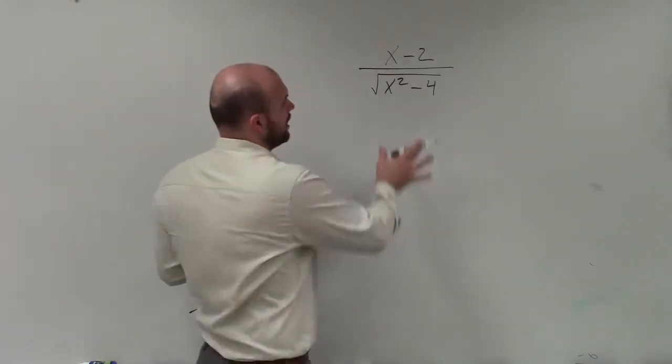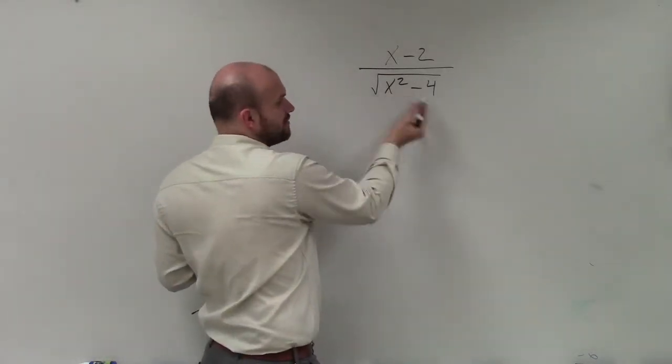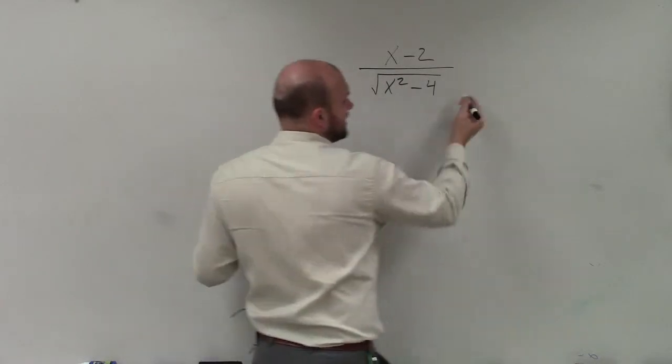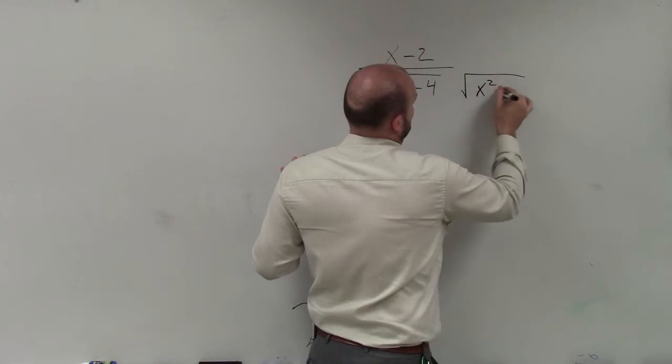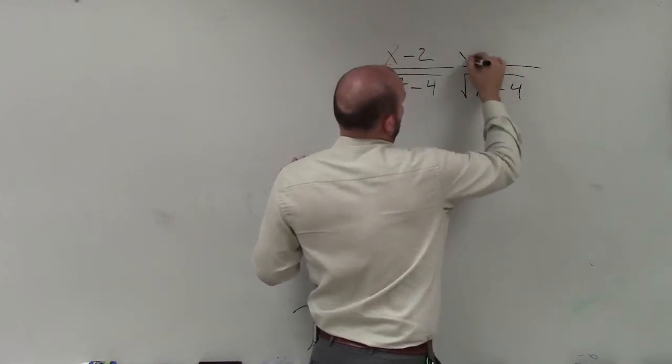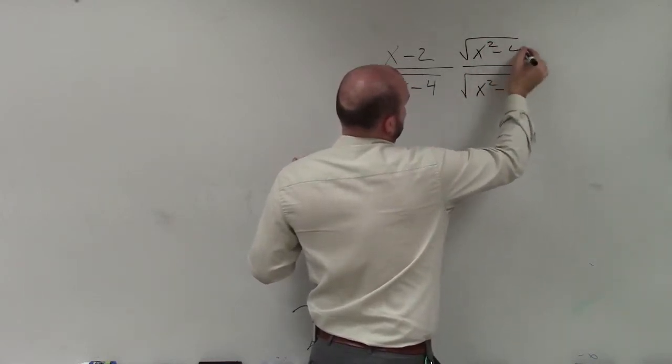I need to multiply by the square root of x squared minus 4 again. I don't need to multiply by the conjugate or anything else, but I just need to multiply by x squared minus 4. And then I multiply by x squared minus 4.